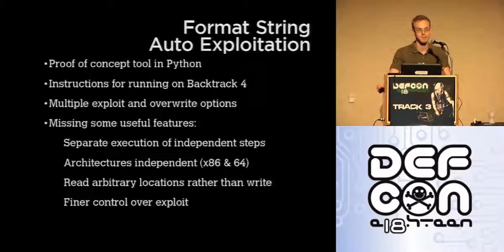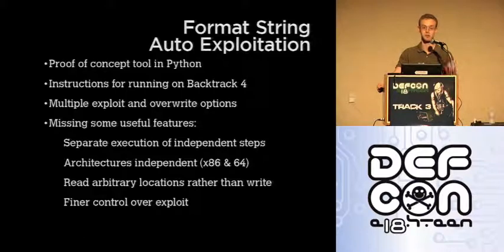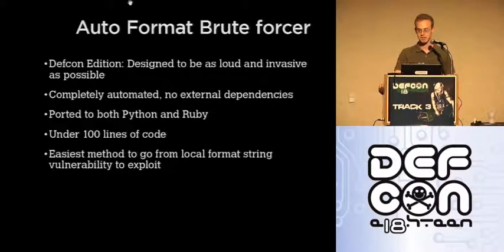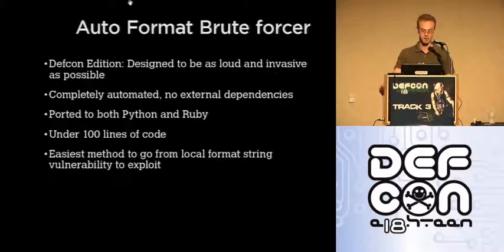The question was: would this work on a syslog thing where the output is going somewhere else? This attack basically works as long as you can read the output from format vulnerabilities and use those in new vulnerabilities. The next code I developed, especially for DEF CON, designed to be as loud and invasive as possible, has been completely automated. I removed that reference to having to get an overwrite location — I'm using basically brute forcing through the stack. Ported both to Python and Ruby, it's under 100 lines of code.